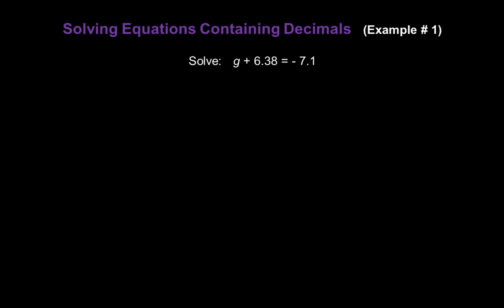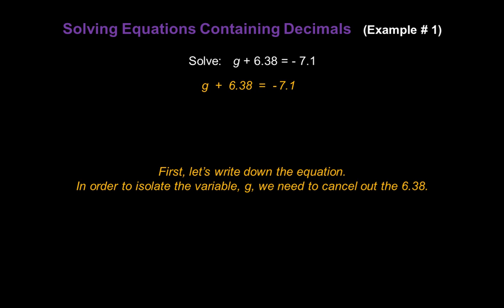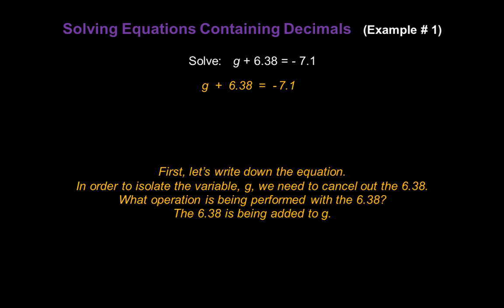Now let's solve some examples together. First: g plus 6.38 equals negative 7.1. Let's start by writing down the equation: g plus 6.38 equals negative 7.1. In order to isolate the variable g, we need to cancel out all the numbers on the same side of the equation with our letter. In this case, we have to get rid of just 6.38. What operation is being performed with 6.38? The 6.38 is being added to g.